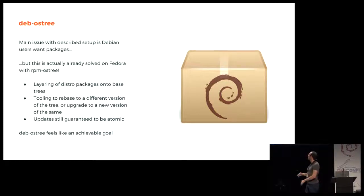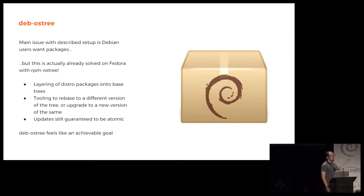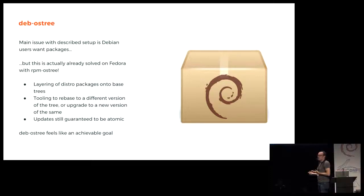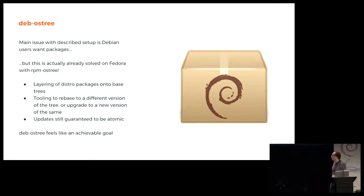That's all fairly transparent, and mostly it doesn't lose some of the guarantees and nice things that OSTree gives you — for instance, that updates are still guaranteed to be atomic. I'm not an expert in the deb package format, but this feels like it should be something achievable, especially if it was done with RPM on Fedora.